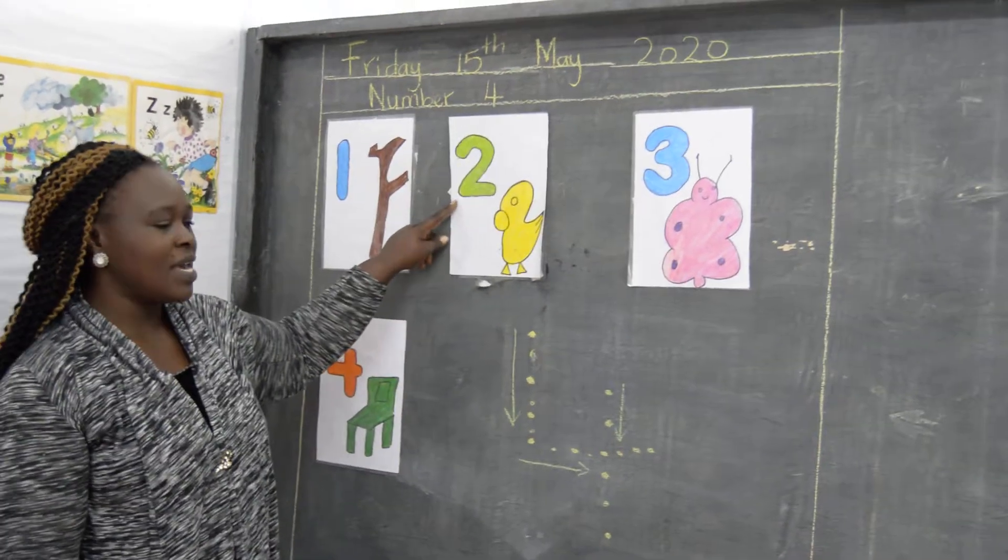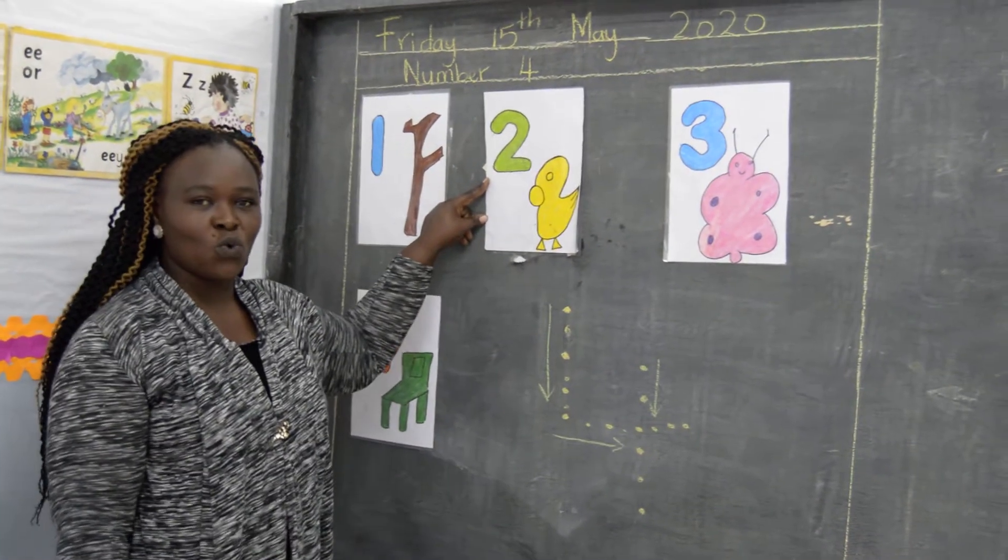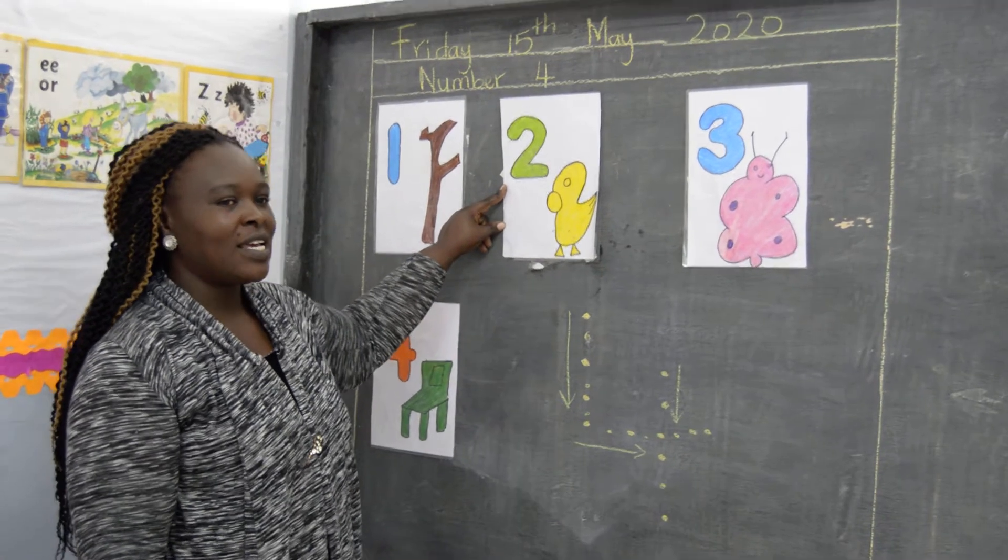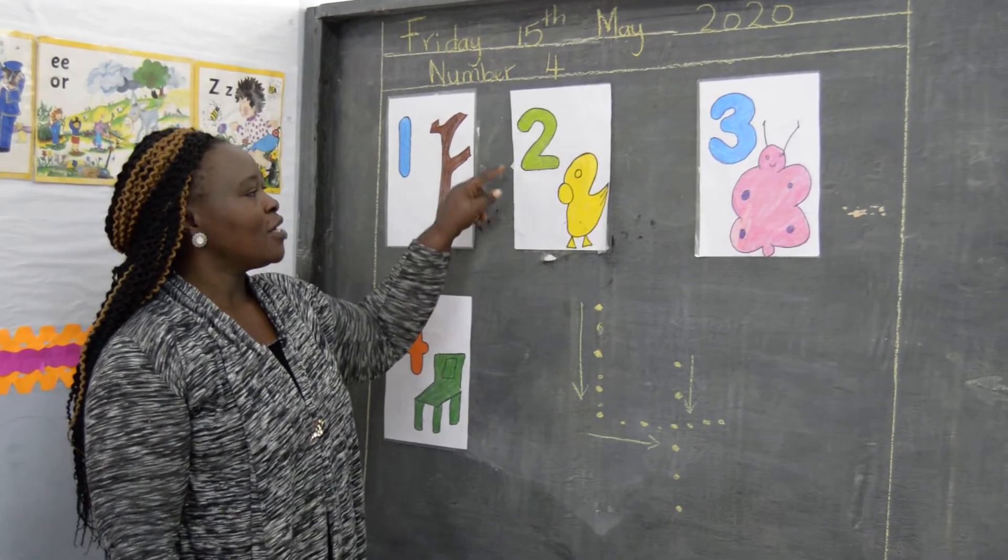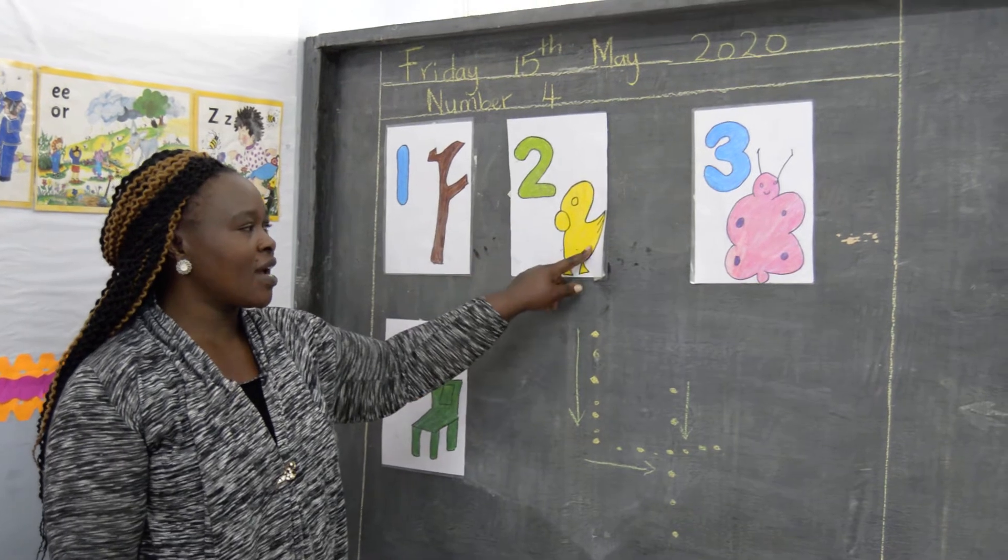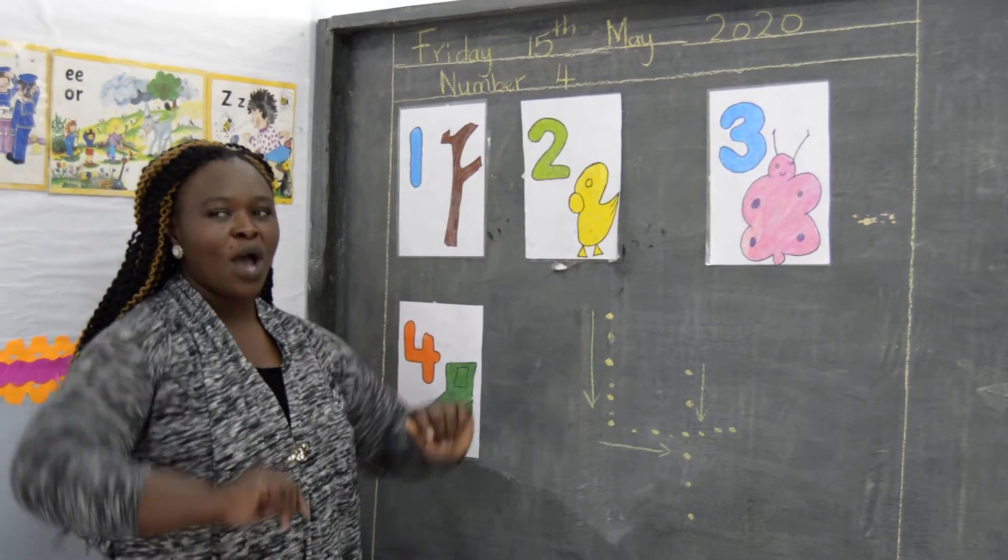The next number is number two. Children, say after me, two like a duck. Kwa, kwa, kwa.